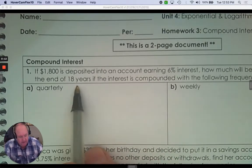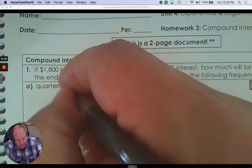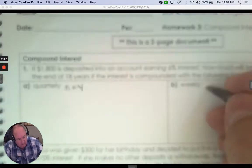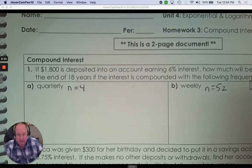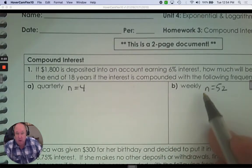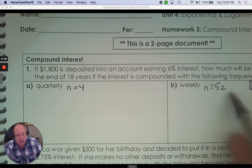If you are compounding quarterly, N equals 4. If you're doing it weekly, that's 52 weeks in a year, N would be 52. Which one would you think give you more money? The more times you compound, the more money you get.